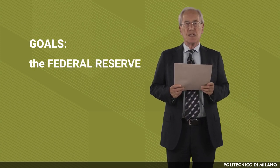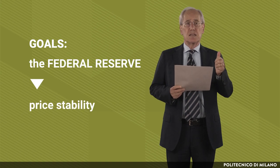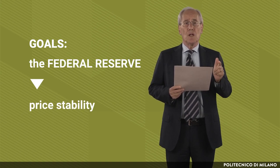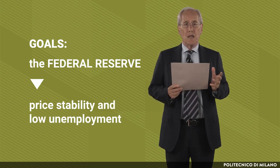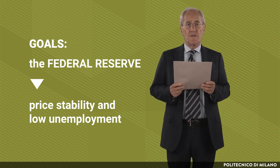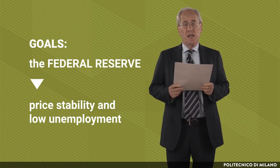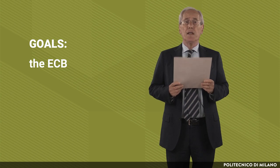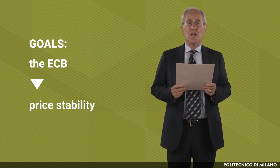Here is a big difference. For instance, the US central bank — which we call the Federal Reserve System — has been assigned in the Banking Act of 1933 two goals: price stability, and a low, as low as possible, unemployment rate. On the other hand, the European Central Bank only has one goal that she is supposed to achieve — that is stability of prices.